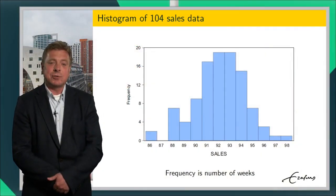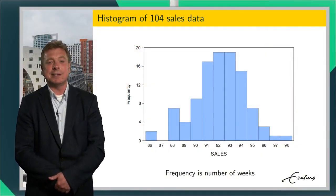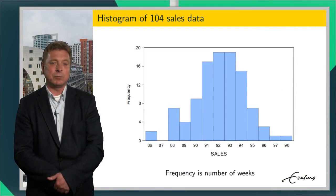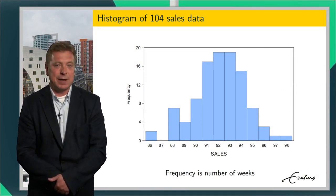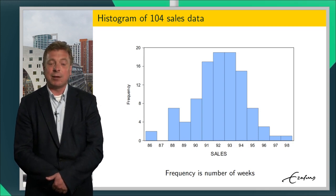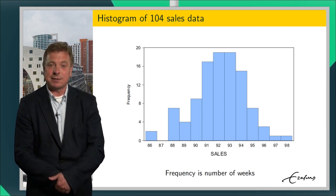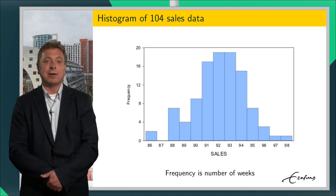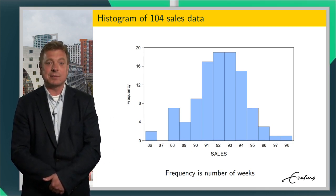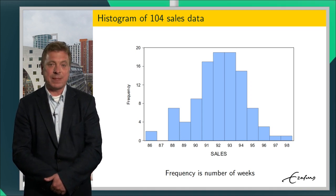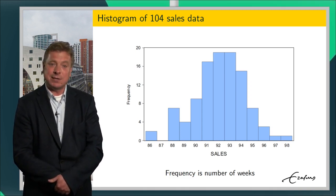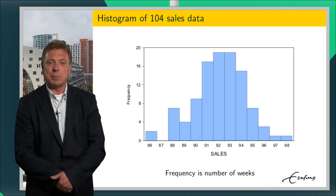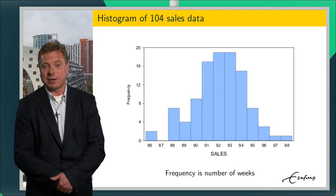In this introductory lecture we will consider a simple example concerning the weekly sales of a product with a price that can be set by the store manager. We expect that lower prices lead to higher sales. The econometrician tries to quantify the magnitude of these consumer reactions to such price changes. This helps the store manager to decide to increase or decrease the price if the goal is to maximize the turnover for this product.